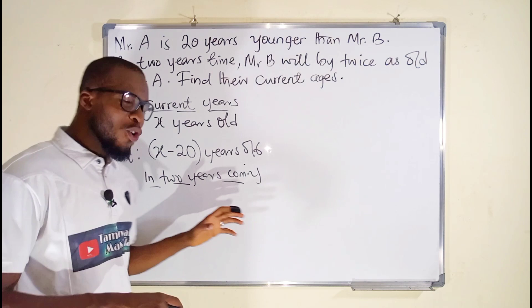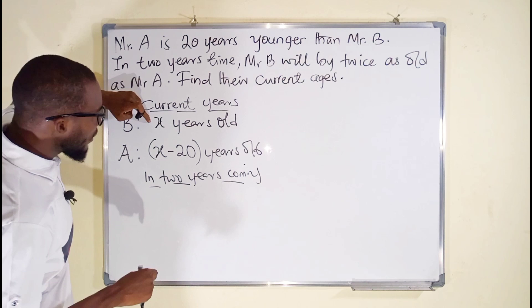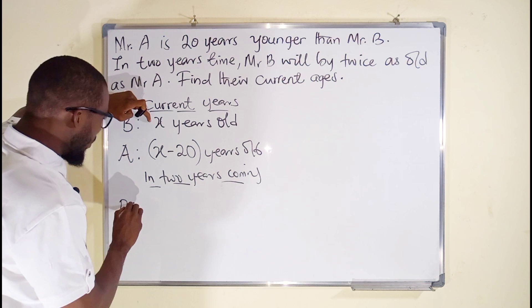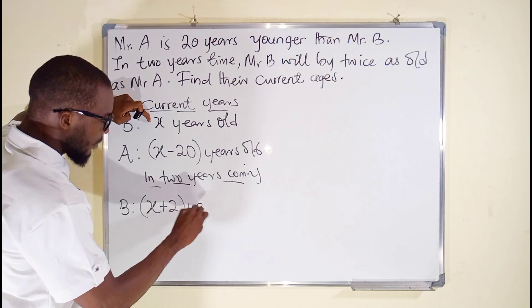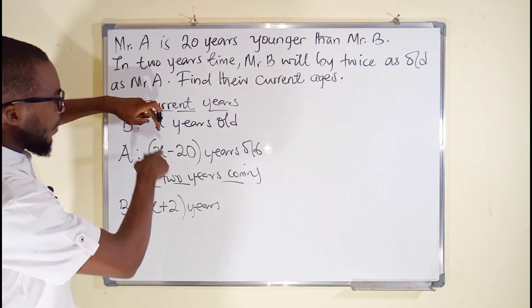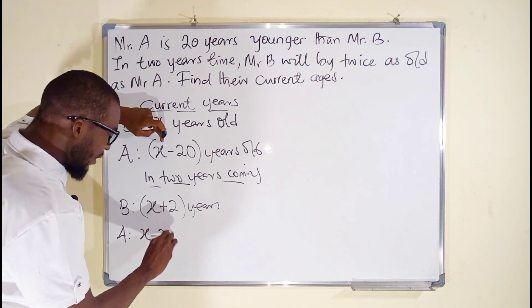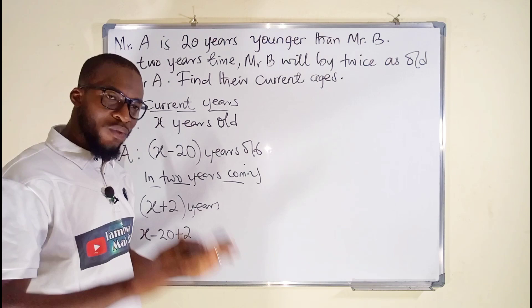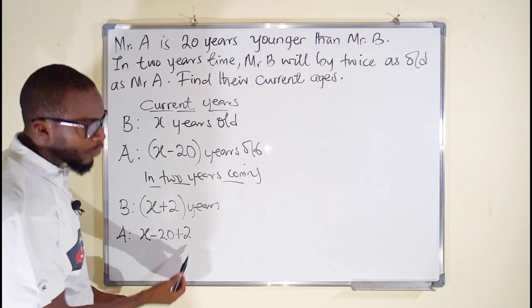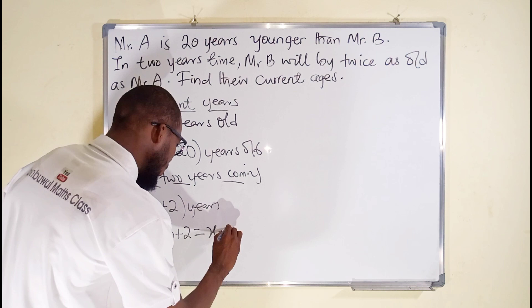In two years coming, each of them will add two years. So currently Mr. B is x years old, therefore Mr. B will be x plus 2 after two years. Mr. A is currently x minus 20, so after two years he will be x minus 20 plus 2, which simplifies to x minus 18.